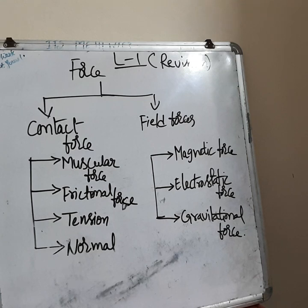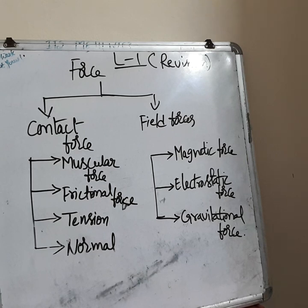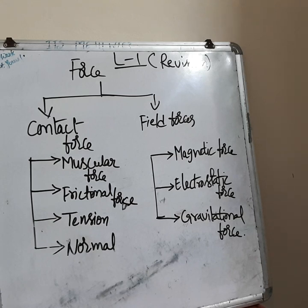Now coming to field forces. In contact force, a force acts with physical contact between two interacting objects. For field forces, there is no contact between the two interacting objects — such forces are called field forces. There are three types: magnetic force, electrostatic force, and gravitational force. Magnetic force is the attraction or repulsion where a magnet can attract or repel another magnet without contact.